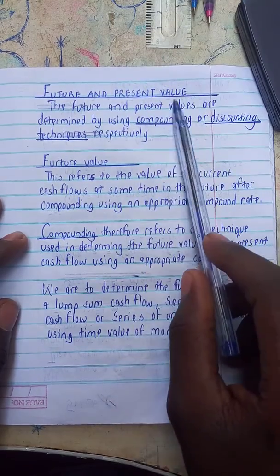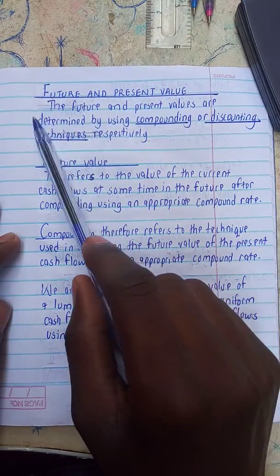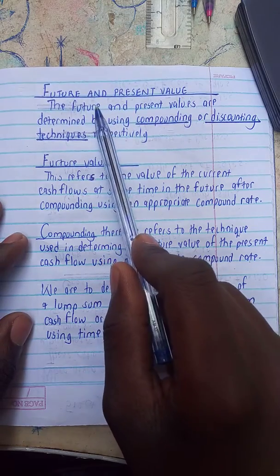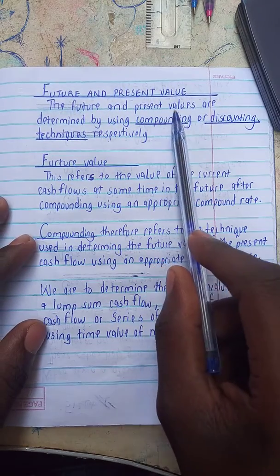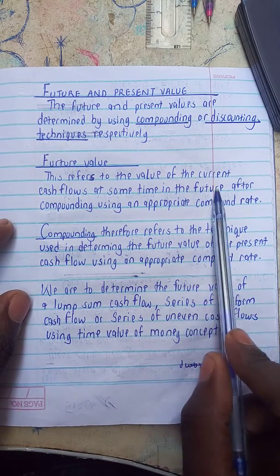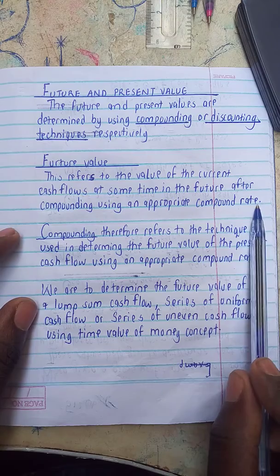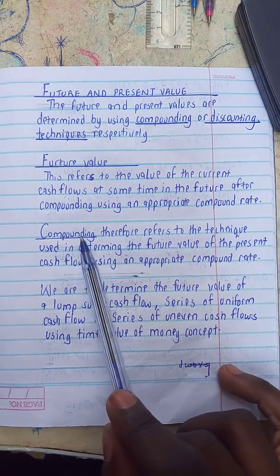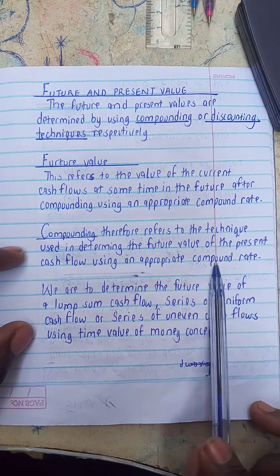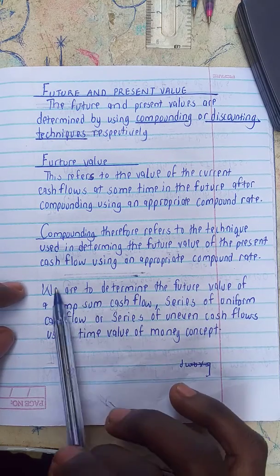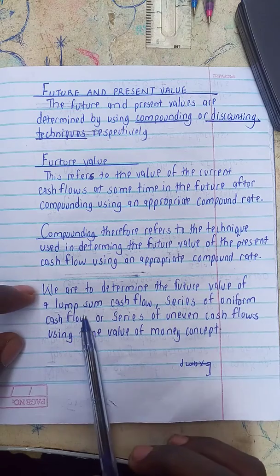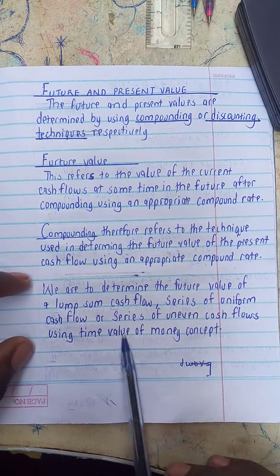This brings us to future value and present value. Future and present values are determined using compounding or discounting techniques respectively — compounding for future value and discounting for present value. Future value refers to the value of current cash flows at some point in the future after compounding using an appropriate compound rate. Compounding refers to the technique used in determining the future value of a present cash flow. We will determine the future value of a lump sum, a series of uniform cash flows, or a series of uneven cash flows using the time value of money concept.